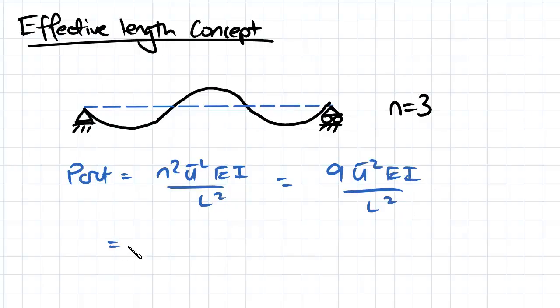And what we can also do is we could then rearrange that to get pi squared EI over L over 3 squared.